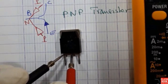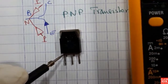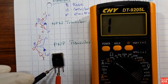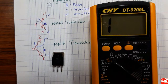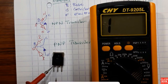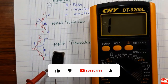Let's put the black probe in the first terminal and the red probe in the second terminal. As you can see, we have nothing on the multimeter. If we put the red probe on the third terminal, still nothing on the multimeter.